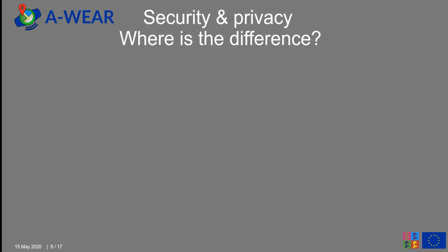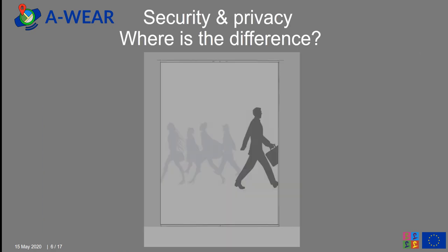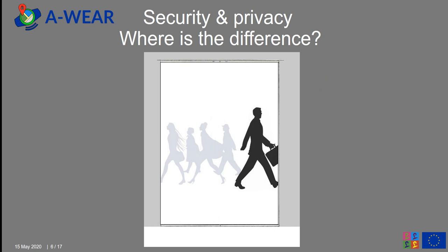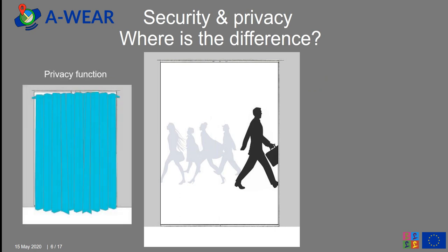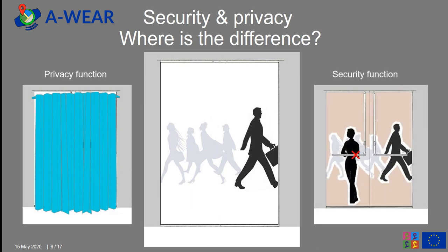Imagine that you have a doorway in your house. If you want nobody from the street to see you, then you can hang a curtain in front of the door, which will provide a privacy function. But if in addition you want to protect your home — for example from robbers — you need a door that will ensure security.